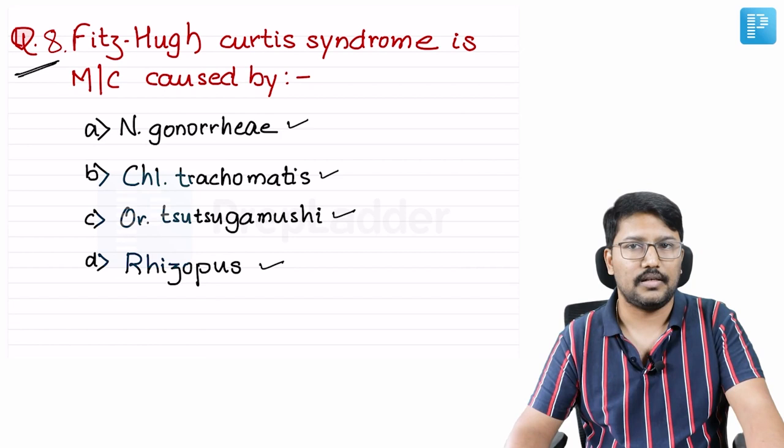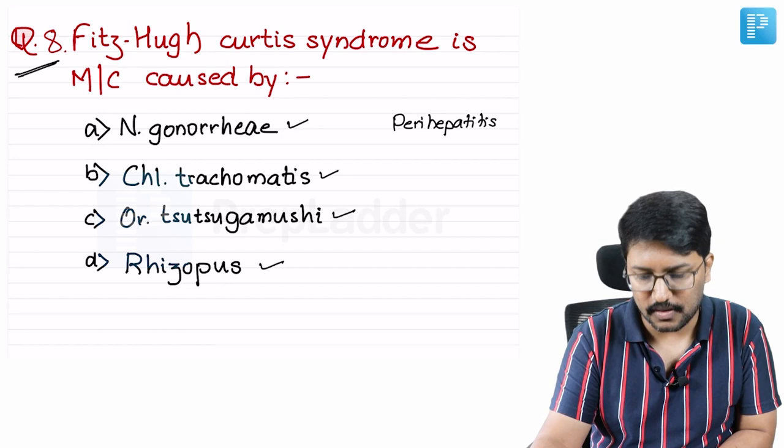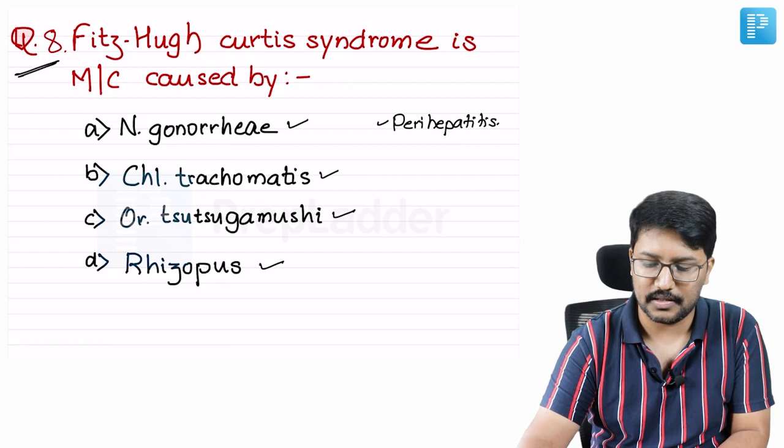Fitzhugh-Curtis syndrome is a form of perihepatitis. Perihepatitis means the patient is developing infection and inflammation of the liver capsule without liver parenchymal involvement. If the parenchyma were involved, it would be called hepatitis. It is called perihepatitis because only the capsule is infected.